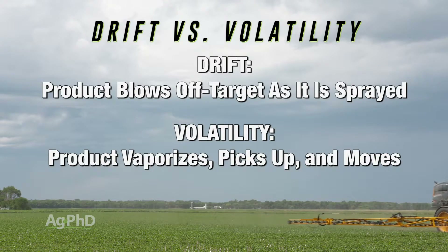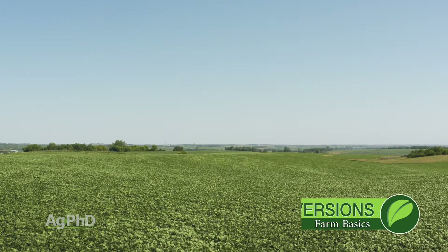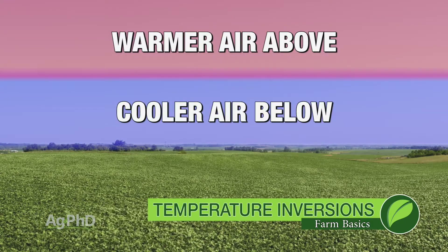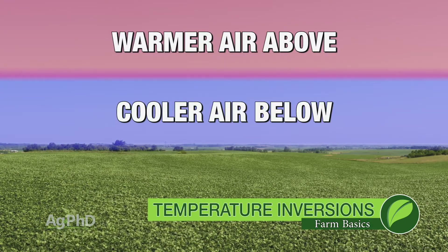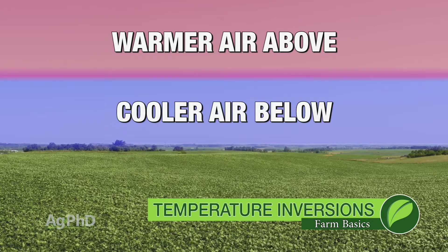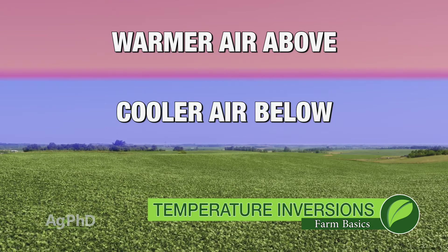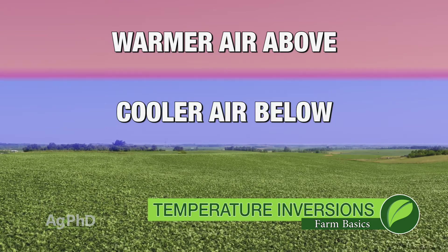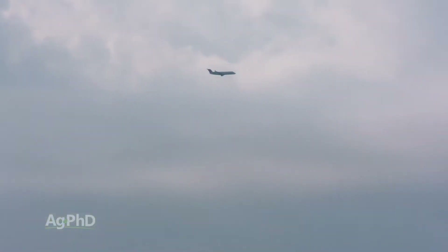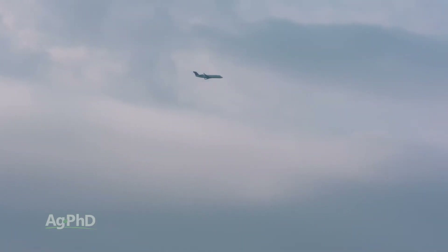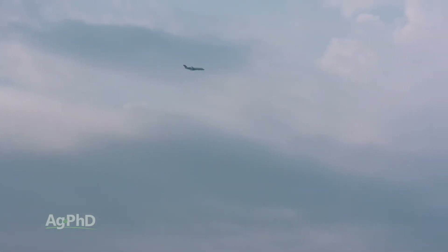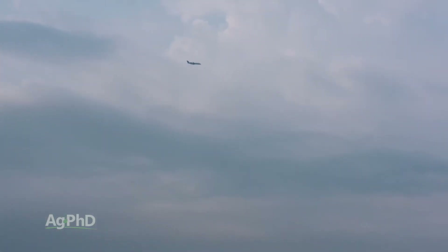Brian mentioned the term air inversion, where temperatures aren't the way they're supposed to be — where the temperature down low, close to the earth, is actually cooler than the temperature up higher in the air. You may see it when you're flying sometimes. Brian and I happened to be flying this past winter into Rochester, Minnesota, and the pilot said we've got quite an air inversion — we're 40 degrees up several thousand feet, and down on the ground it was well below freezing with a lot of frost.